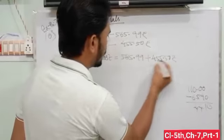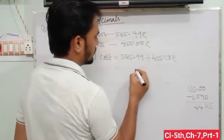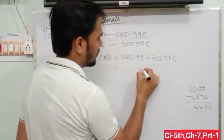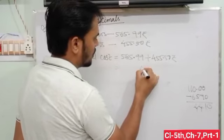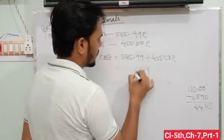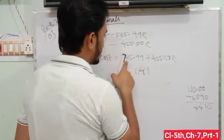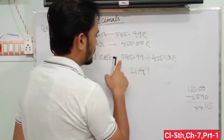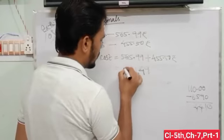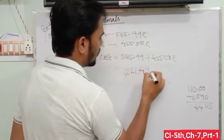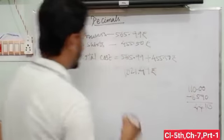Then both are in like decimals. So 9 plus 0 is 9, 9 and 5 is 14, so 4 carry 1. 5 and 1 is 6, 6 and 5 is 11, carry 1. 6 and 1 is 7, 7 and 5 is 12, carry 1. 5 and 1 is 6 and 4. 1021.49 rupees.